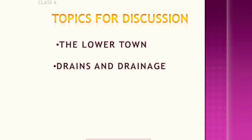So the next topic is drains and drainage. The drainage system of Harappan cities was one of the best in ancient times. Even at that time they maintained it in a proper way. Drains were constructed on either side of the roads. Kitchens and bathrooms had drains connected to the street drains, which were covered with slabs of stone.